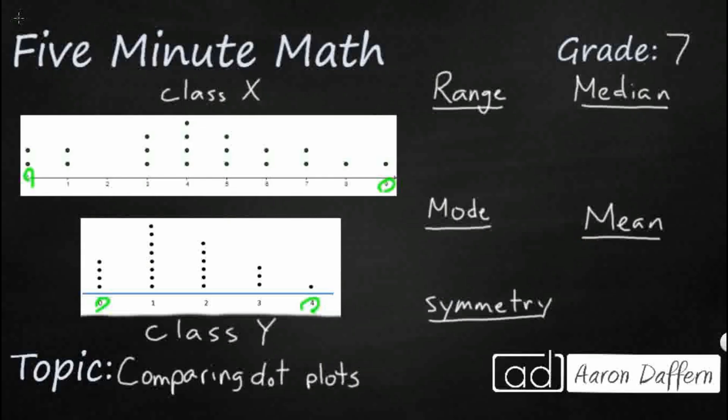Well the first one would be the range. So remember the range is simply the difference between the greatest number and the smallest number. So class X it's just nine minus zero because that's our range. The greatest one is nine the smallest is zero so that equals nine. Class Y pretty simple. It's going to be four minus zero because the greatest is four the smallest is zero so that's going to equal four. So if we were to compare these two we would say the range of class X is greater than the range of class Y.